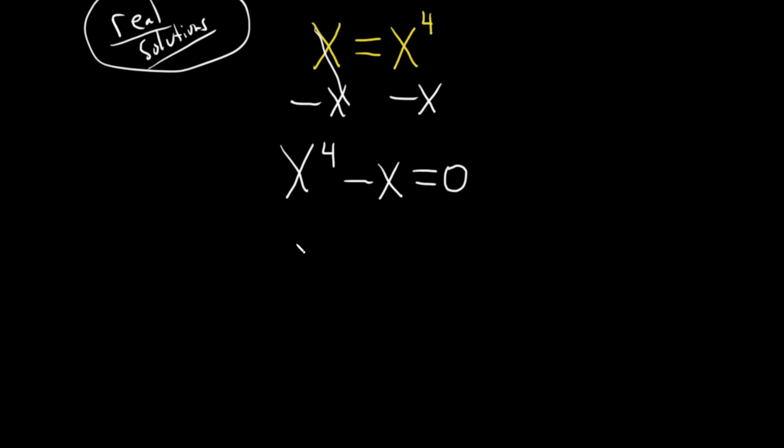Now we can pull out an x because we have a common factor. So we have x parentheses and to figure out what goes here you ask yourself what do you multiply by x in order to get x to the 4th? Well x cubed.